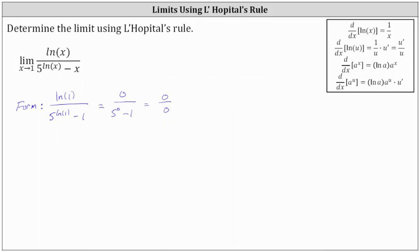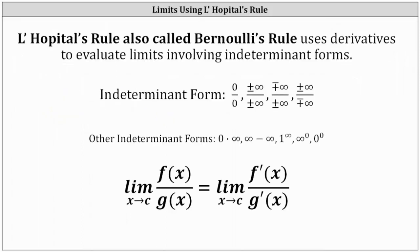For a quick review: since we have one of these indeterminate forms, the limit as x approaches c of f(x) divided by g(x) equals the limit as x approaches c of f prime of x divided by g prime of x. This is L'Hôpital's rule.